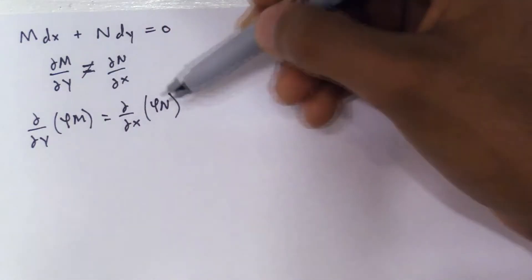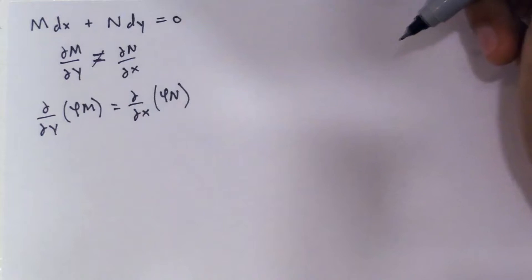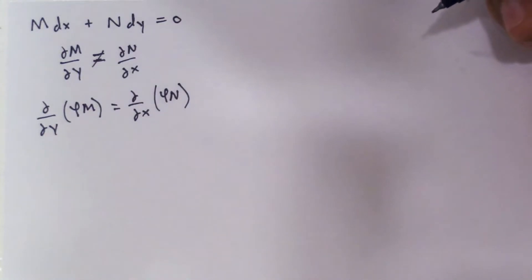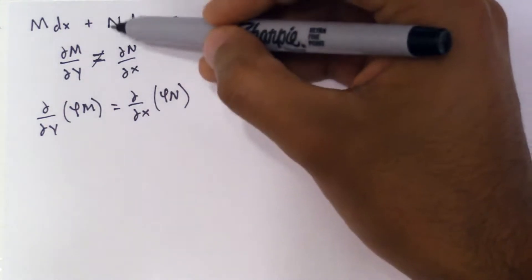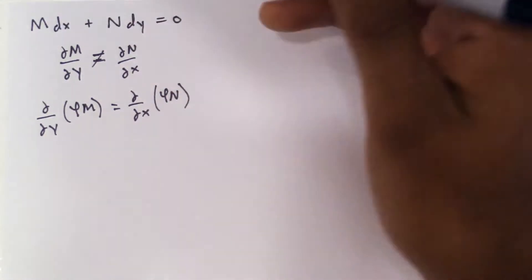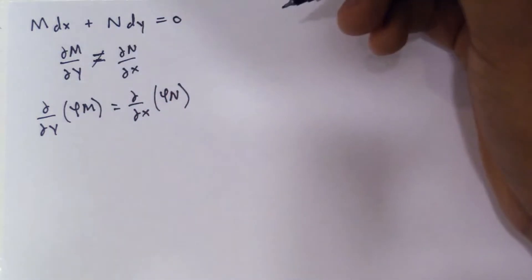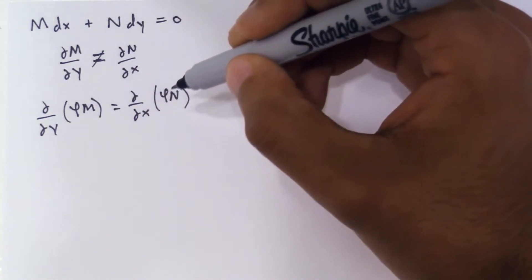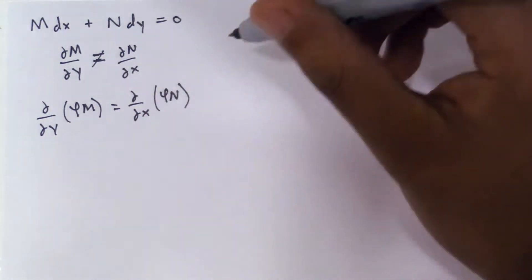It's very simple to say this generally, but we have to find an equation so we can solve for phi. To do that, we have to assume one of two things — this is a matter of process of elimination. Maybe you can guess from the function N or M whether they deal with mostly y's or mostly x's, or what cancels out. We have to assume that phi is a function of x or a function of y, and that will simplify this equation so we can solve for phi.